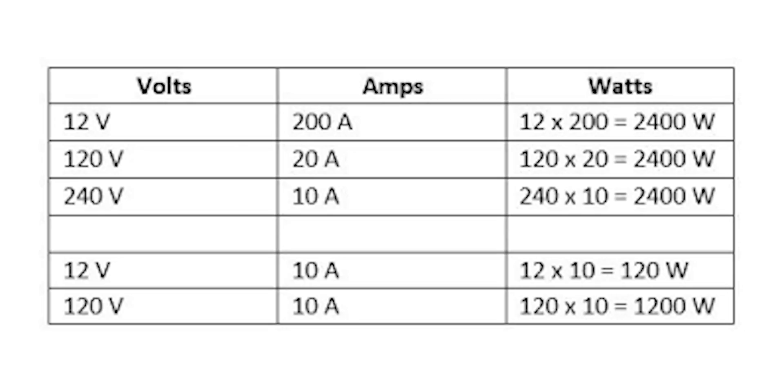Now let's get into why all of this matters in the context of fast charging. In order to charge a battery faster, you can either push more voltage with the same amount of current, or push more current with the same amount of voltage. Both implementations have their own advantages and disadvantages. The combination of voltage and current are the primary building blocks of every fast charging technology out there, and it's what differentiates one implementation from another.